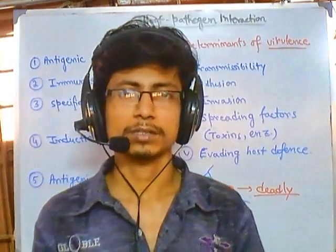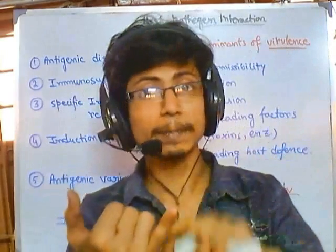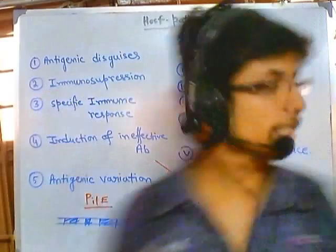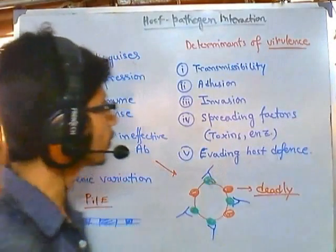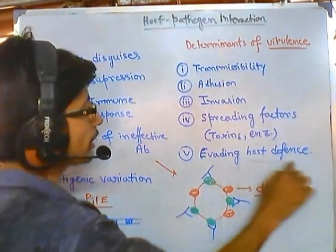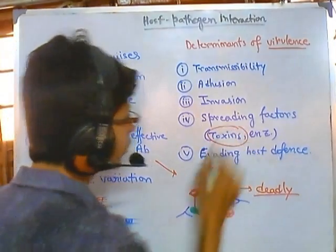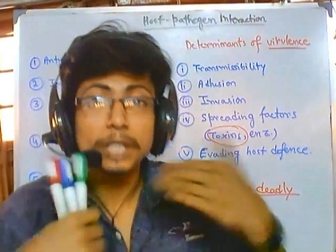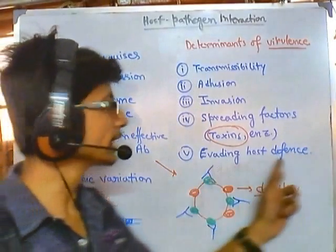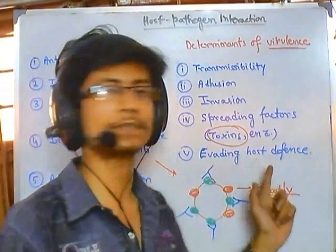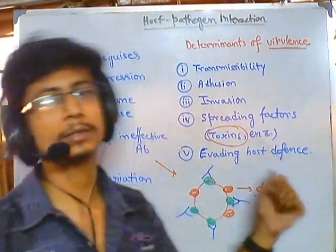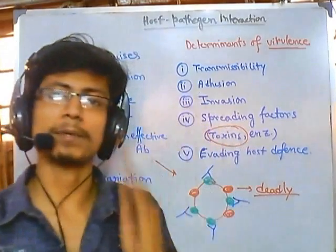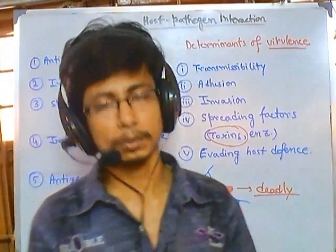There are many more evasion mechanisms, but these are the five major ones: hiding, immunosuppression, exploiting immune-free regions, inducing ineffective antibodies, and antigenic variation. We have previously talked about adhesion, invasion, and spreading factors — now we've covered evading host defenses. Toxins will be discussed in the next video. Creating an infection is not enough unless you can also evade the host defense, because the host defense will try to block you. To establish a successful infection, pathogens must elude the immune defenses, and that is how the whole thing is established.